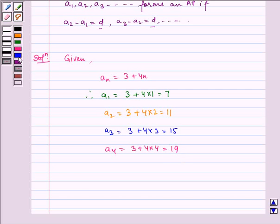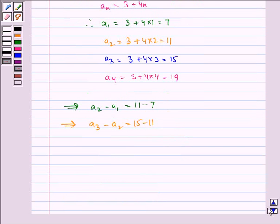This implies a2 - a1 = 11 - 7 = 4. Similarly, a3 - a2 = 15 - 11 = 4, and a4 - a3 = 19 - 15 = 4.